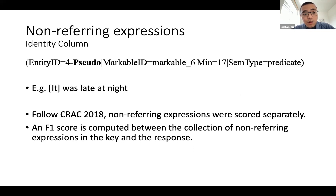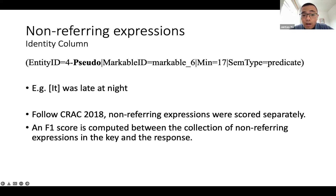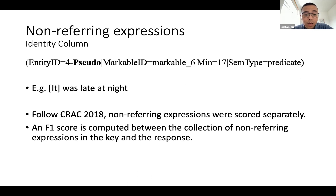Non-referring expressions are also annotated in the identity column. We use specific suffixes to identify non-referring expressions, and you also have the option to specify the semantic type attributes for them. We follow CRAC 2018 in scoring non-referring expressions separately from identity reference, computing an F1 score between the collections of non-referring expressions in the key and the response.